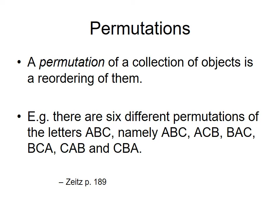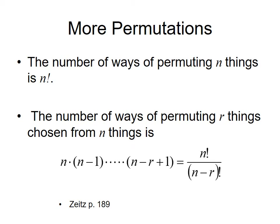A permutation of a collection of objects is a reordering of them. There are six different permutations of ABC — order matters here: ABC, ACB, BAC, etc. The number of ways of permuting n things is n factorial, so 3 factorial equals 6, which is how we got that.